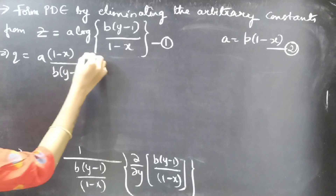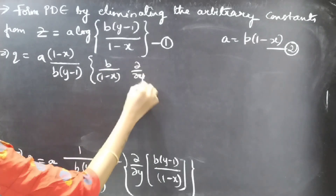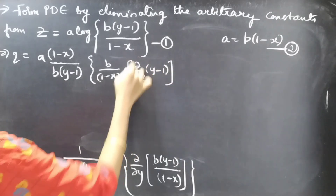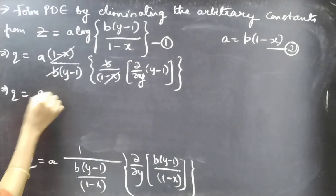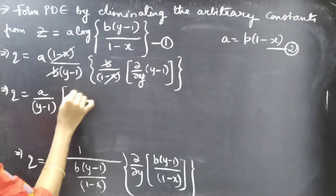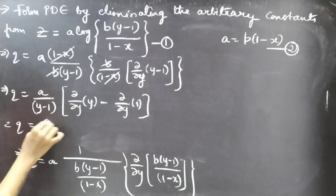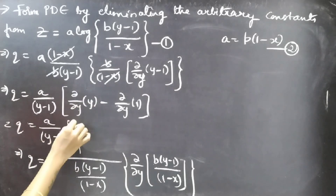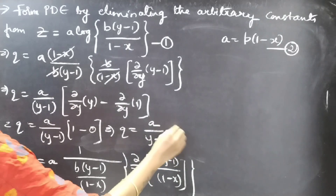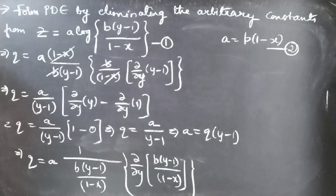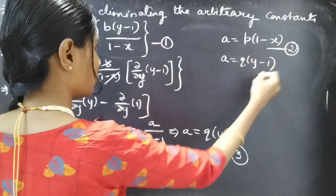This gives q = a·(1-x)/(b·y - 1) into b/(1-x), where b/(1-x) is constant and the partial derivative of y with respect to y is 1, minus the partial derivative of the constant which is 0. The 1-x and b terms cancel, giving q = a/(y-1), or equivalently a = q·(y-1). We call this equation 3.